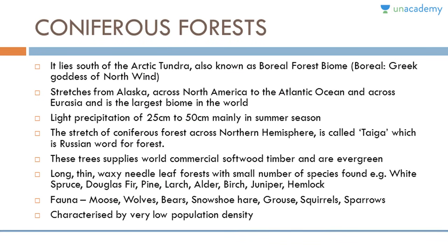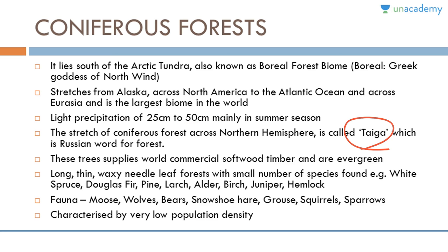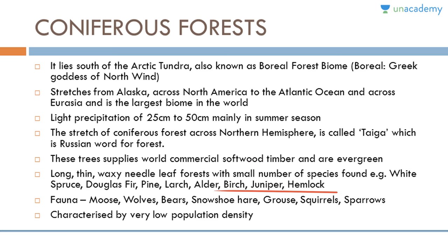The coniferous forest biome lies south of arctic tundra and is also known as the boreal forest biome. 'Boreal' is the Greek goddess of the north wind. This biome stretches from Alaska across North America to the Atlantic Ocean and across Eurasia, making it the largest biome in the world. It has light precipitation of 25 to 50 centimeters, mainly in summer. The stretch across the northern hemisphere is called taiga, a Russian word for forest. Trees supply commercial softwood timber and are evergreen, with long thin waxy needle leaves — species include white spruce, Douglas fir, pine, larch, alder, birch, juniper, and hemlock.